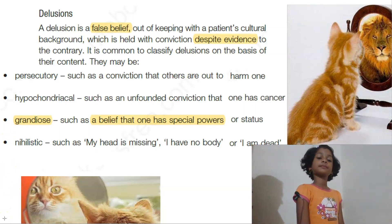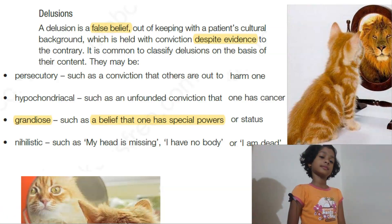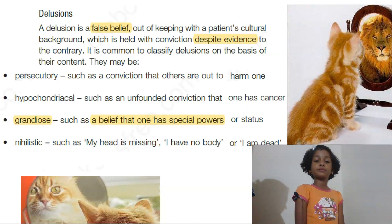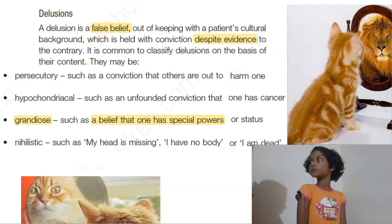So what are the types of delusion? Persecutory. Persecutory means he thinks that someone is going to harm him.